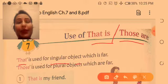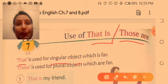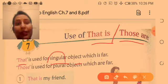That is, what is that is, used for singular object which is for distance. But what is it? It is a single object, okay? Only one object. Singular means only one object, okay?